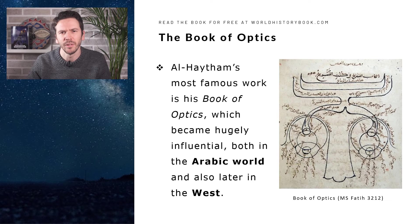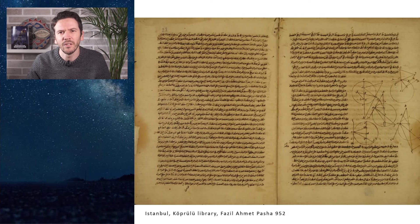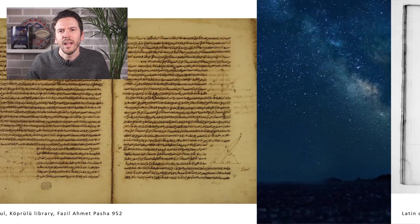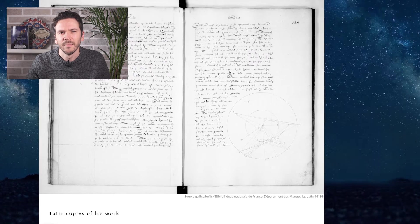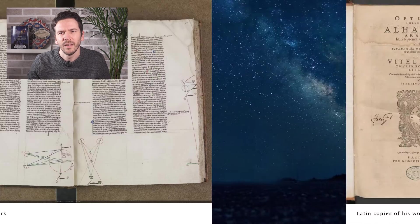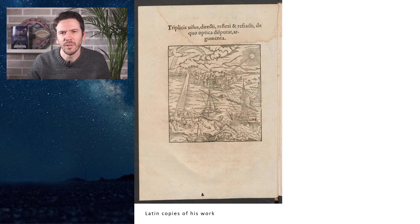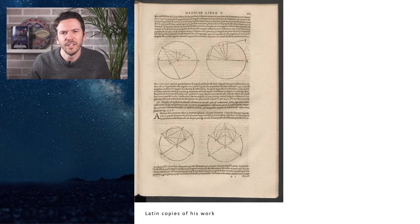Al-Haytham's most famous work is his Book of Optics, which became very influential both in the Arabic world and also later in the West. His pages are filled with all kinds of geometric constructions, often representing reflecting light rays. Here we see a handwritten medieval Latin version, and here the first printed version. Above the page we see the name Al-Hazan, which is the Western variant of Al-Haytham. The book also includes beautiful pictures representing reflection and complicated geometrical images.